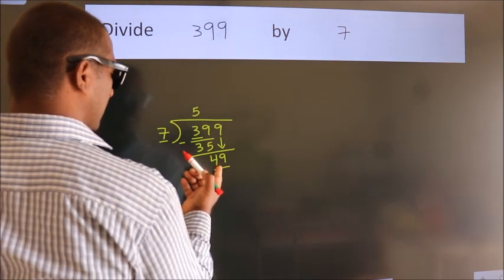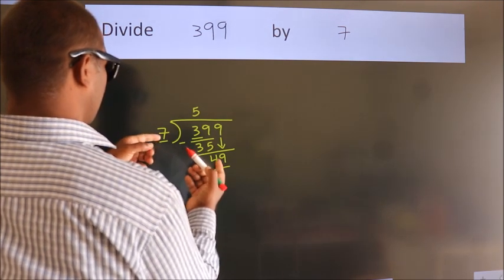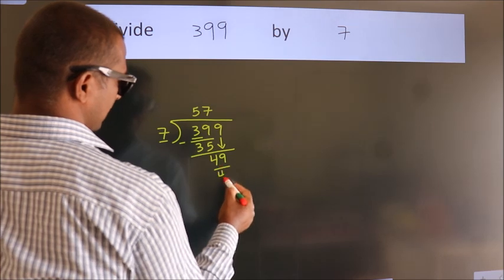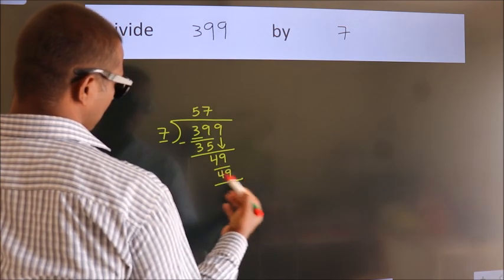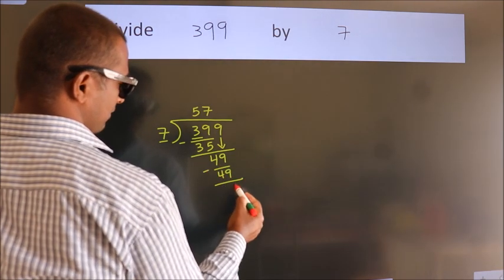When do we get 49? In 7 table. 7 sevens, 49. Now we subtract. We get 0.